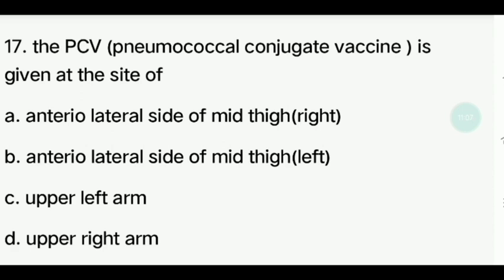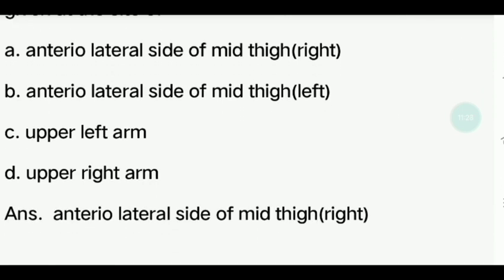Seventeenth question. PCV (Pneumococcal Conjugate Vaccine) — what is the site of administration? Options: Anterior lateral side of mid thigh, right side; Anterior lateral side of mid thigh, left side; Upper left arm; Upper right arm. Answer is Anterior lateral side of mid thigh, right side.